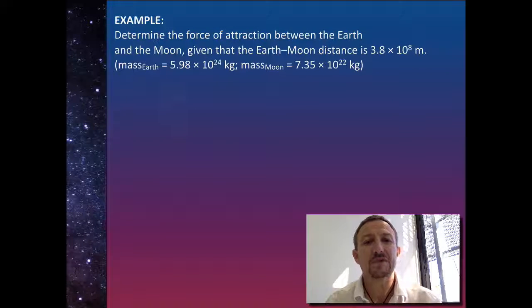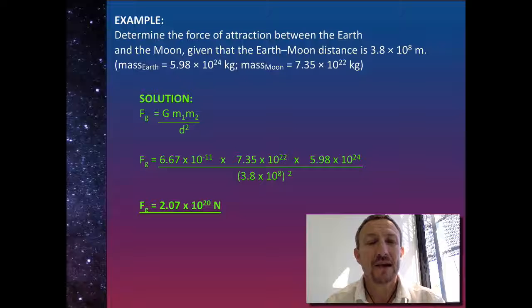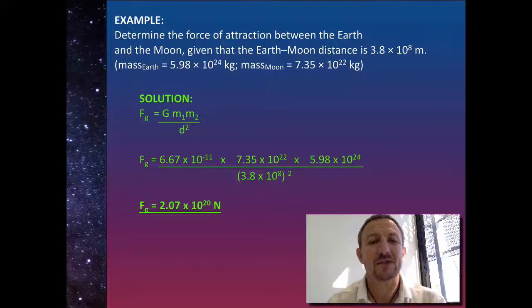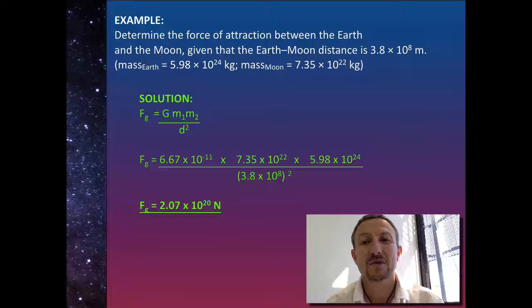So here we're going to determine the force of attraction between the earth and the moon, given that the earth-moon distance is 3.8 × 10⁸ metres. We know that the mass of the earth is 5.98 × 10²⁴ kilograms, and the mass of the moon is 7.35 × 10²² kilograms.